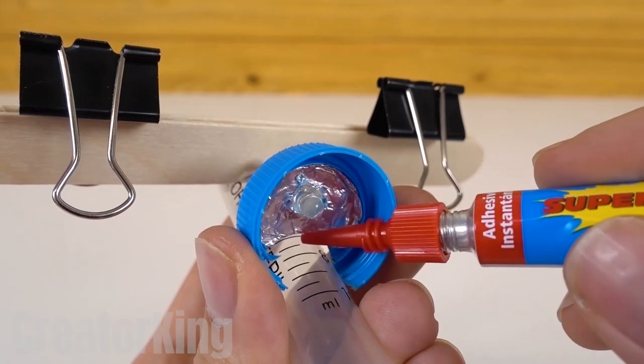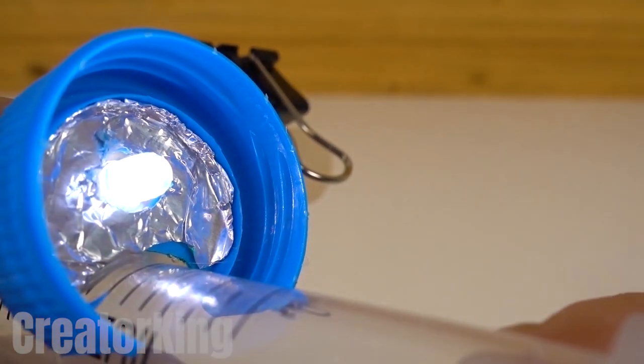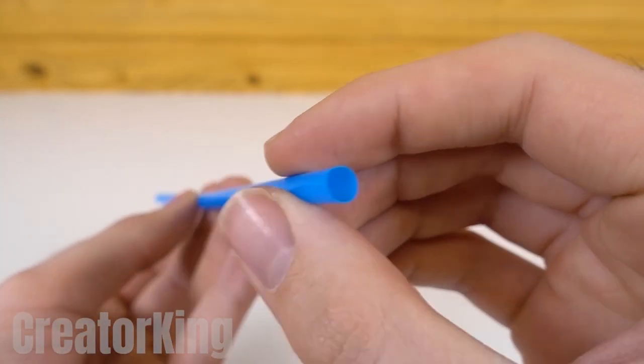Secure the light bulb with a little glue and test that it works. Aluminum reflects a lot of light. Glue the entire piece to the main syringe. Just look at the pretty little light. It's kind of bright, but it doesn't matter.